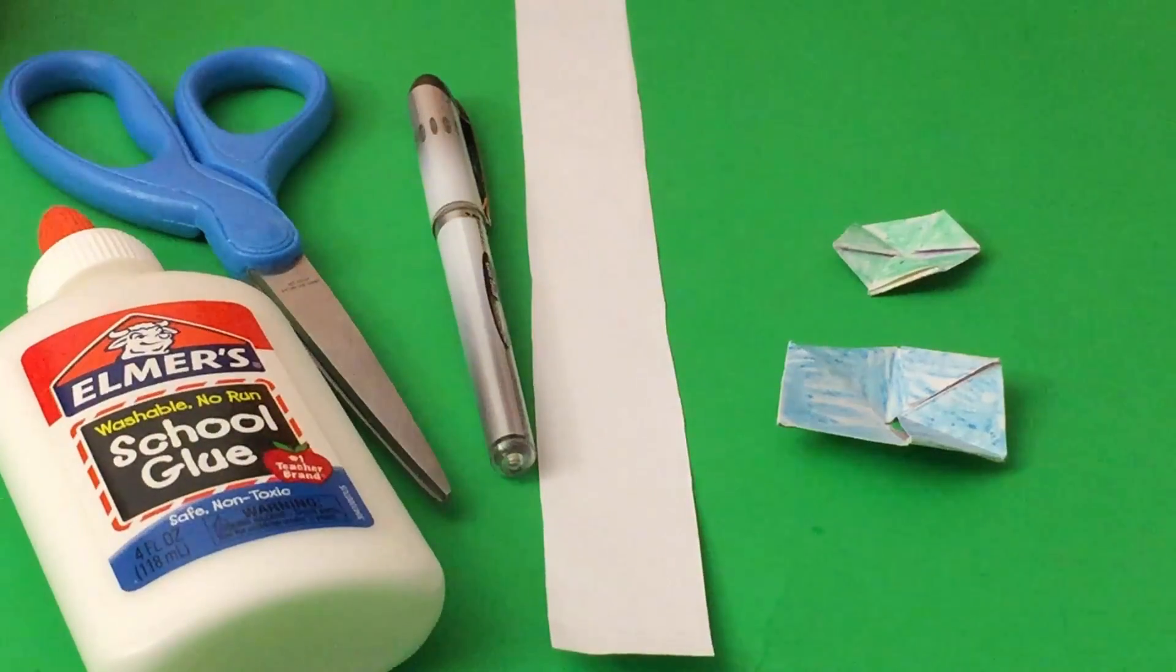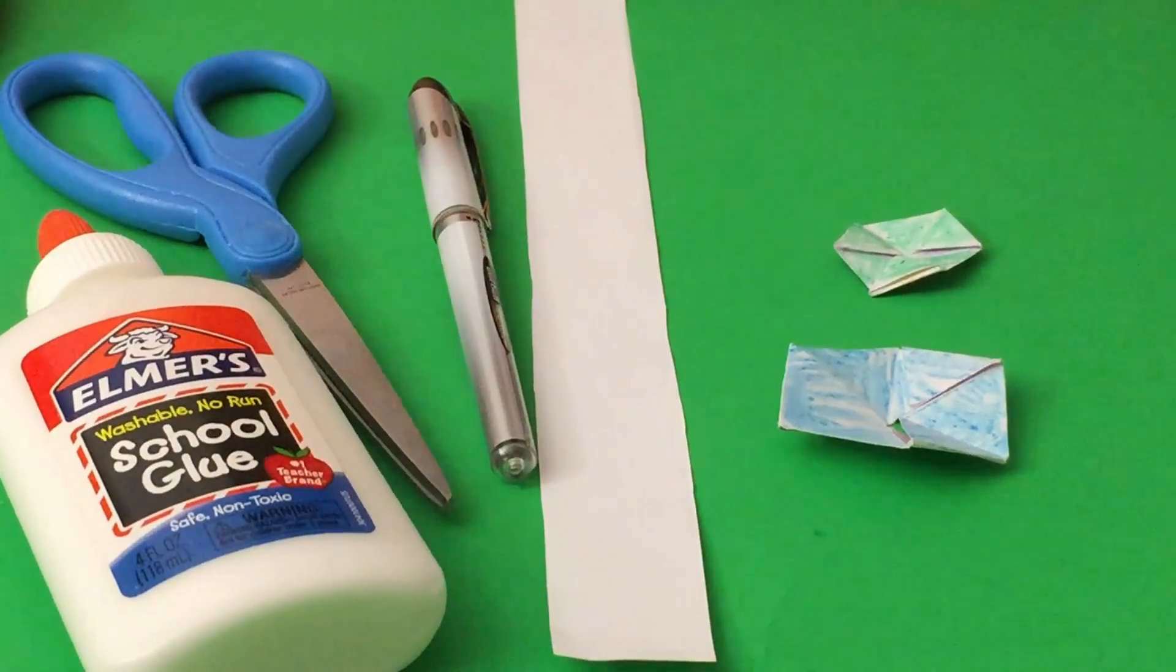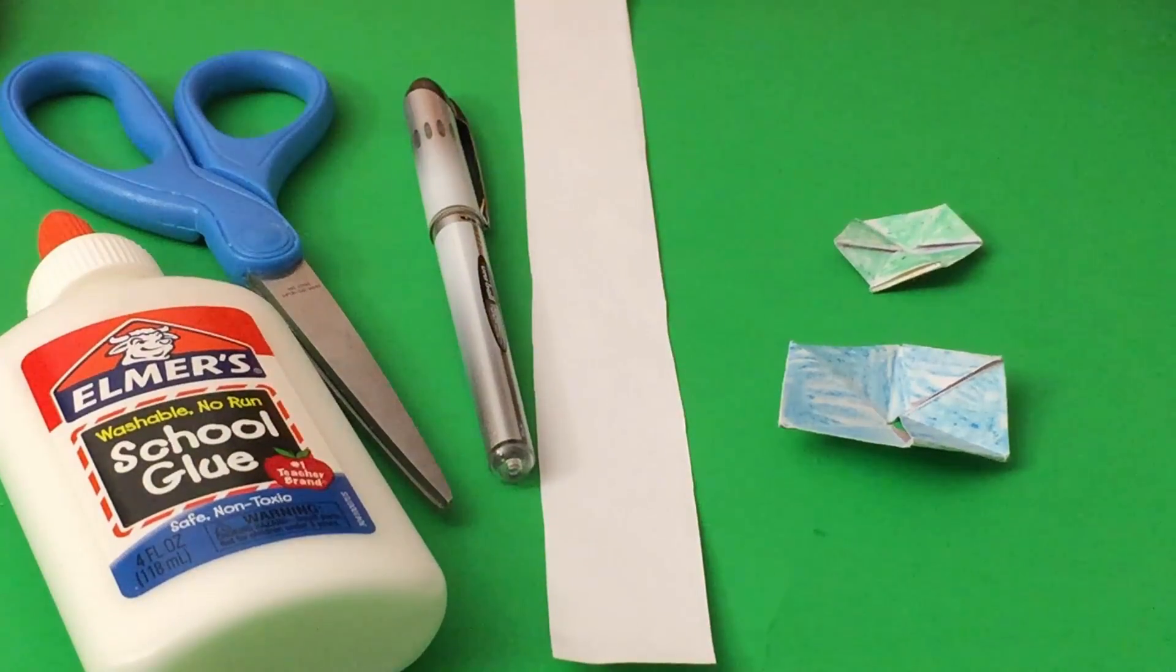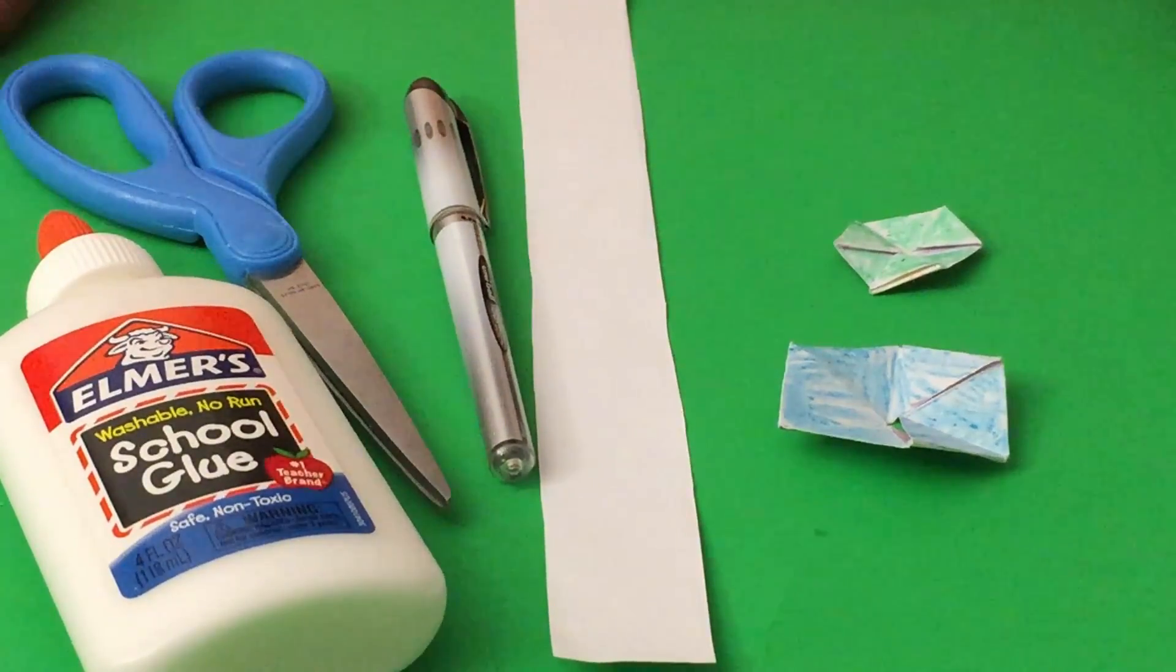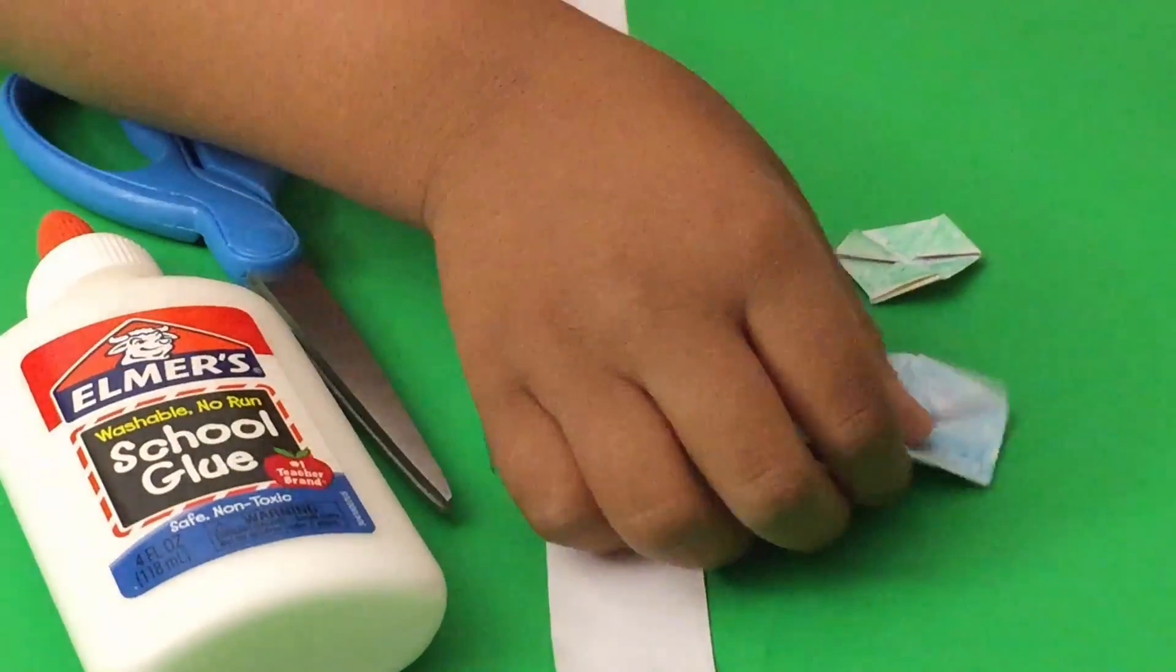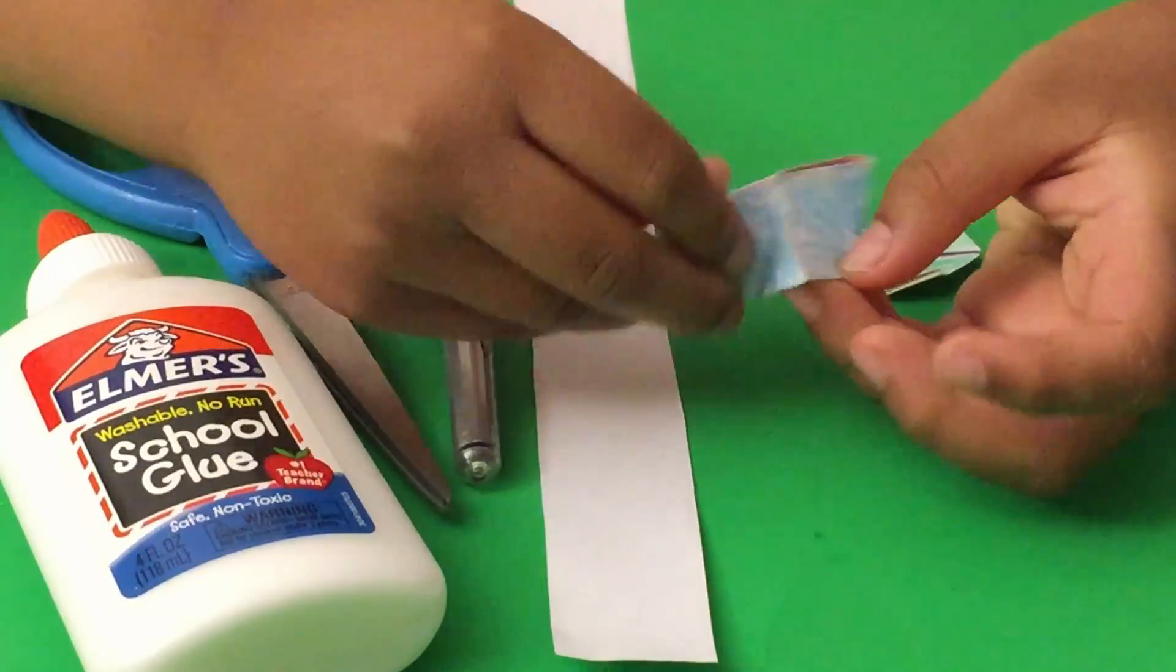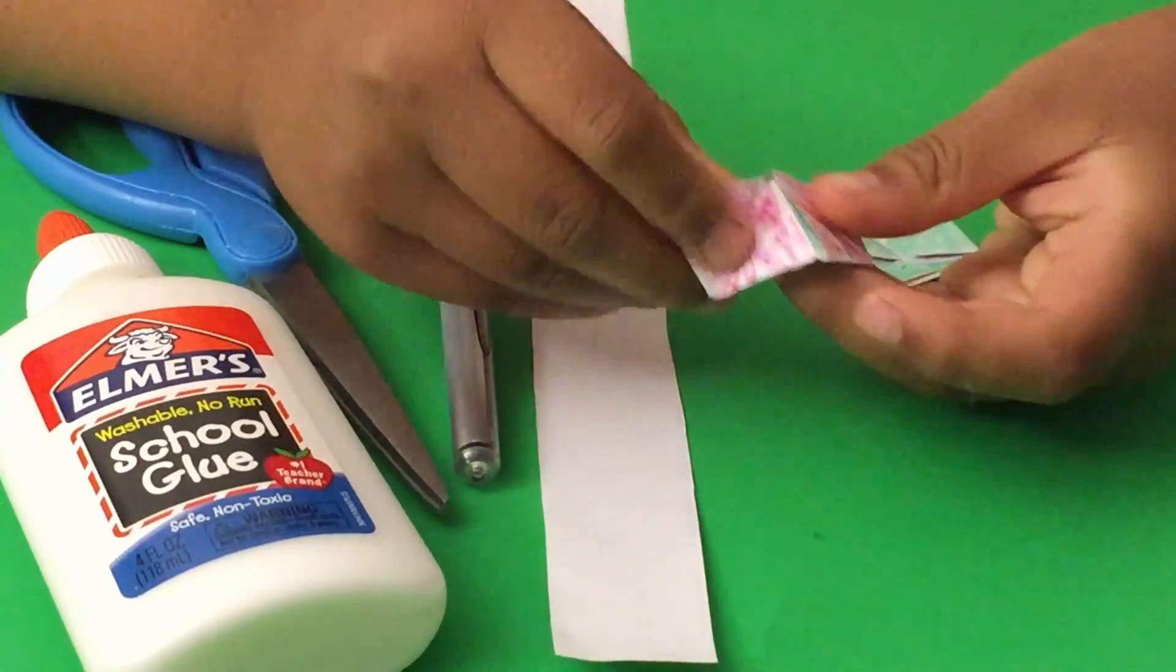Hello everybody, this is Rohan from Math Gems and today I will be talking about trihexaflexagons. A trihexaflexagon is a paper hexagon that we can flex to get three different patterns.